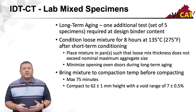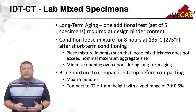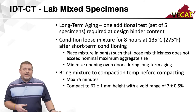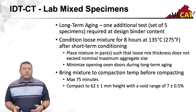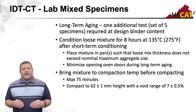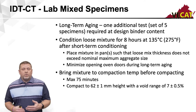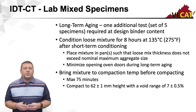For long-term aging, you condition the loose mixture for eight hours at 135°C or 275°F, which must occur after your short-term conditioning. So if I batch and mix my specimen in the morning and do the four-hour short-term conditioning at compaction temperature, I can do that in one day. At the end of that day, I need to allow the specimens to cool down — take them out of the oven. Don't leave them in; you don't want a slow-cool process.